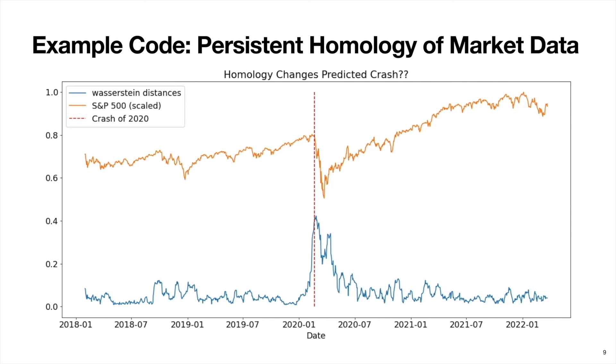And then for some context, we also have scaled S&P 500 close prices plotted in orange just above. And this vertical red line here is indicating when the crash of 2020 occurred. And then as it turns out, the peak in this Wasserstein distance time series seems to correspond very closely with when this crash occurred.